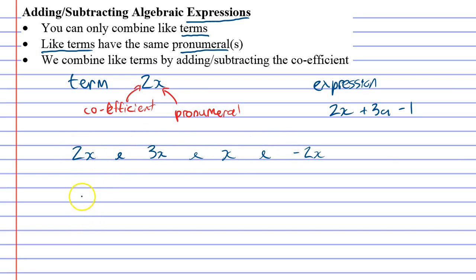One that does throw people is something such as 5x squared. These are all like terms, so I'm going to mark them with an L. But 5x squared is not a like term. The reason it's not is because of this power of 2. Essentially this means I've actually got 2 x's, whereas when I look at these four, I've only got 1 x.